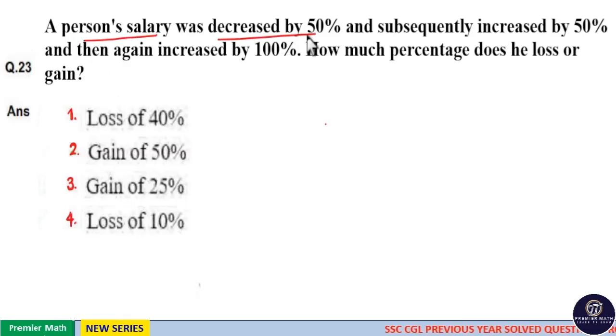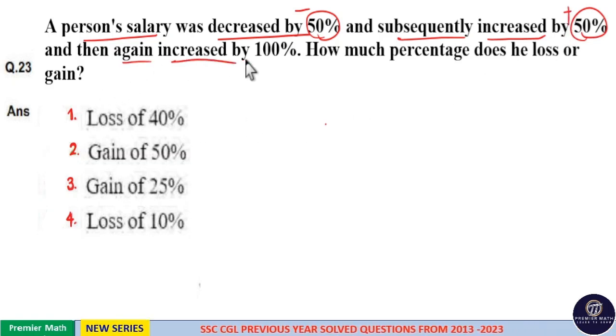A person's salary was decreased by 50% and subsequently increased by 50%, and then again increased by 100%. How much percentage does he lose or gain?